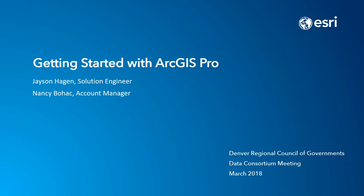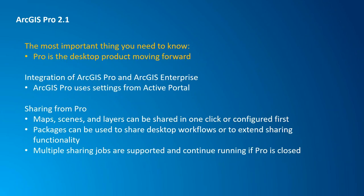We are now at ArcGIS Pro version 2.1. The most important thing I want you to know is that Pro is our desktop product moving forward. We still have ArcMap, but there's really no development going into ArcMap anymore — only bug fixes. All of our investment as far as technology goes is going into Pro. Pro is really designed to be integrated with ArcGIS Enterprise — that's how we're packaging ArcGIS Server now — which means your portal, ArcGIS Server, data store, and web adapters. It also integrates well with ArcGIS Online, since Pro was developed after the advent of ArcGIS Online.